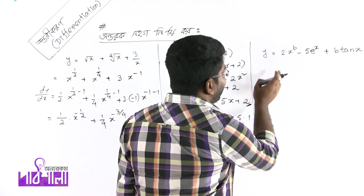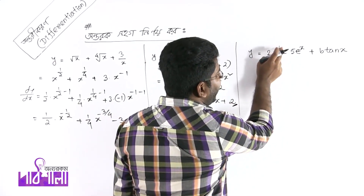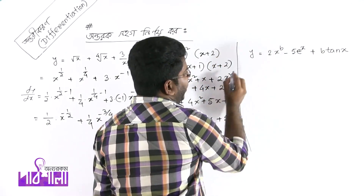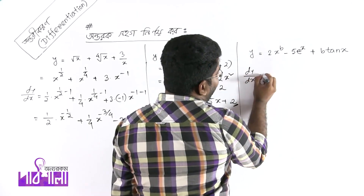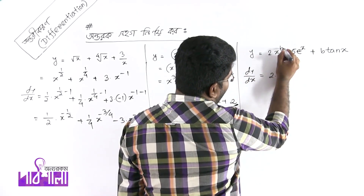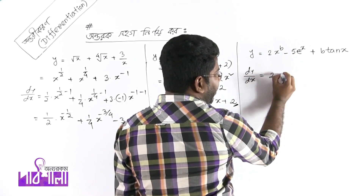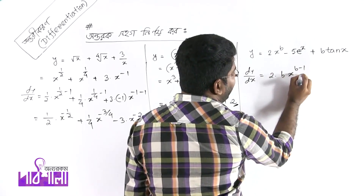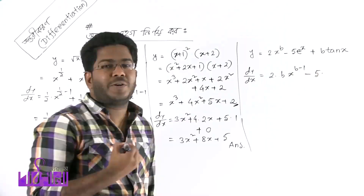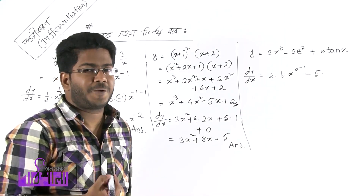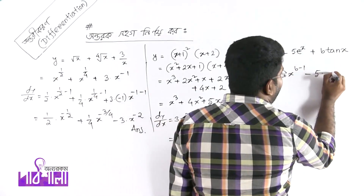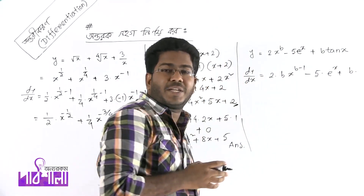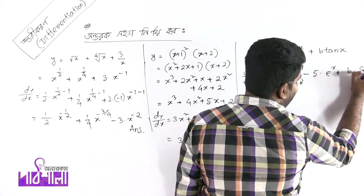Next example: y = 2x to the power b minus 5·e^x plus b·tan(x). Differentiating: x^n gives n·x^(n-1), so 2x^b differentiates to b·x^(b-1). Minus 5·e^x differentiates to e^x. And b·tan(x) differentiates to b·sec²x.